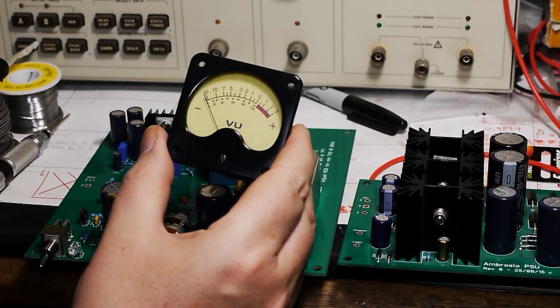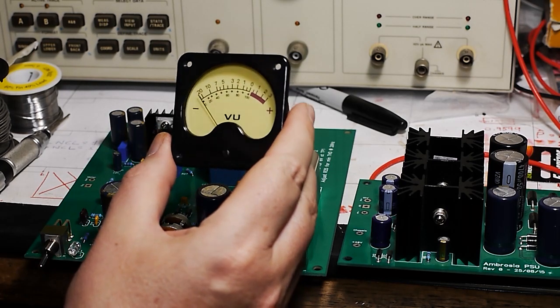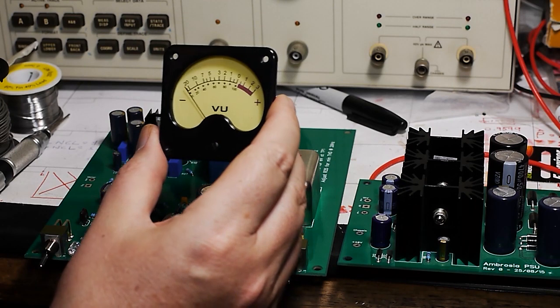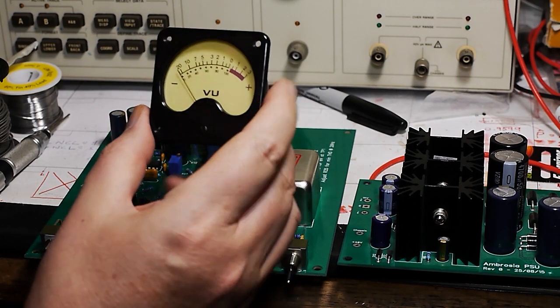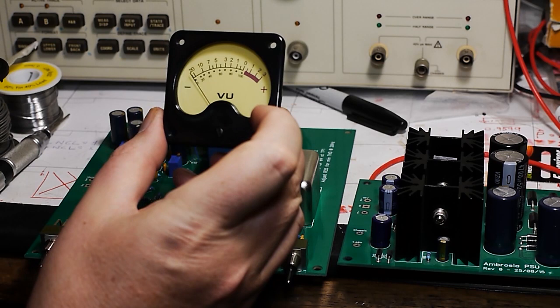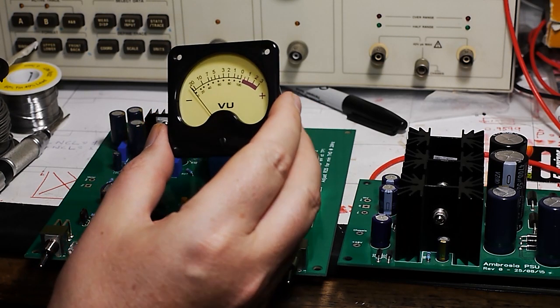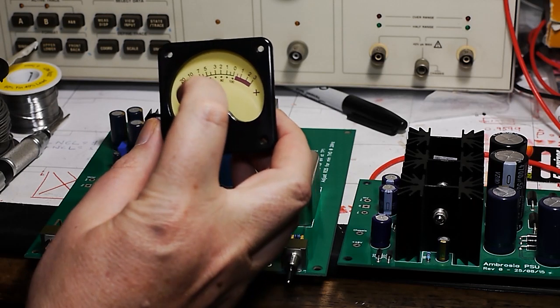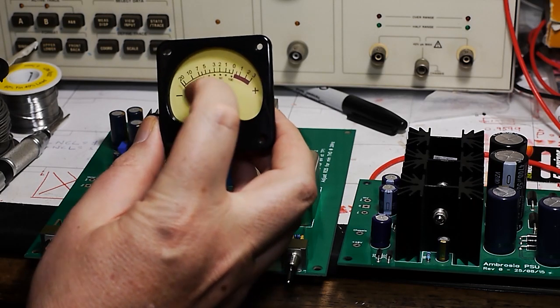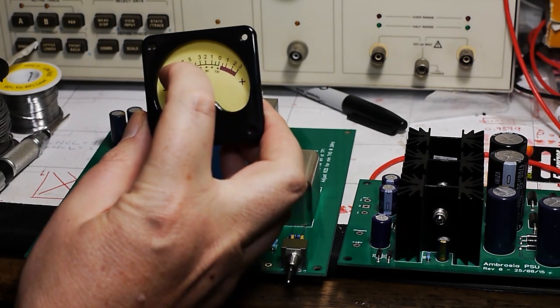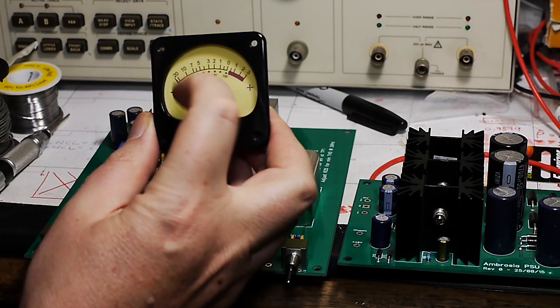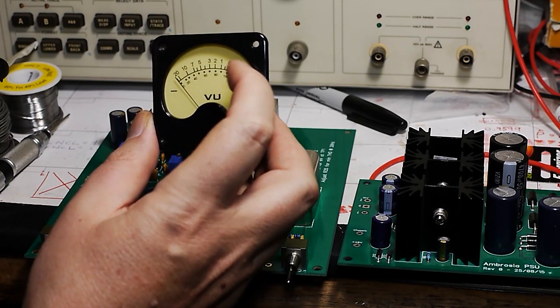Now once again, in days of old you could get a proper VU meter which could just be driven with a rectifier, and the movement would have the correct behavior. And I believe it's about a 300 millisecond time to travel from minimum to full scale.